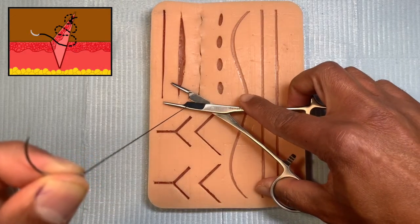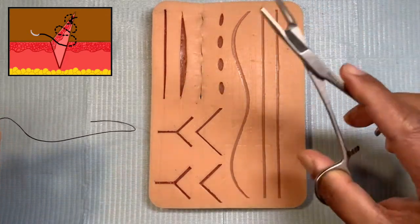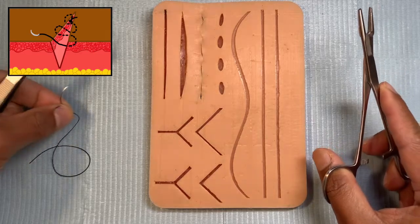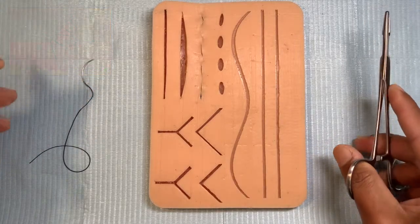You've completed the intracuticular closure and you cut it at the skin level. This is a suture with an integrated scissor, which is quite useful for this purpose. Thank you for watching this video. In this series we have many other videos to help you improve your surgical skills.